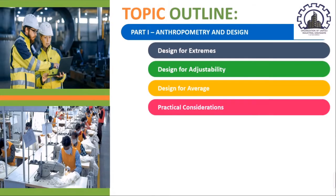The topic outline for Chapter 5, Part 1, which is Anthropometry and Design, includes Design for Extremes, Design for Adjustability, Design for Average, and lastly Practical Considerations.